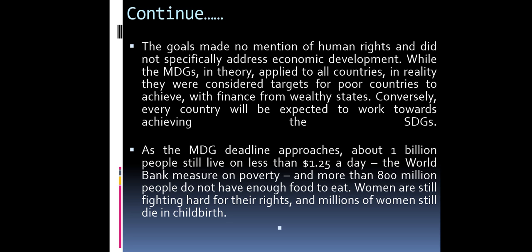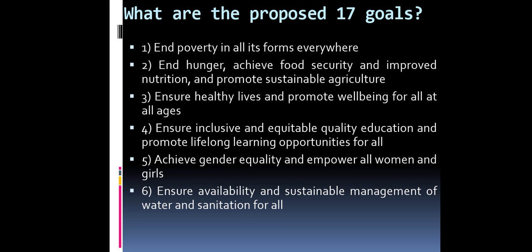As the MDGs deadline approaches, about 1 billion people live on less than $1.25 a day according to the World Bank, more than 800 million people do not have enough food to eat, women are still fighting hard for their rights, and millions of women still die in childbirth.